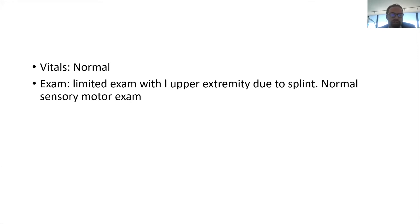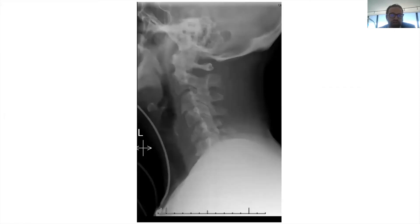With a trauma activation like this, the first thing to do is check the ABCs. The trauma team comes in, confirms vitals are okay, she's breathing okay, and she doesn't have internal bleeding requiring an ex-lap or similar intervention. Once that checks out, you continue with your survey and get a CT or x-ray — usually a CT scan of the cervical spine.